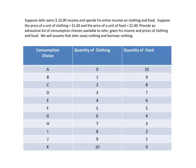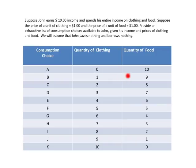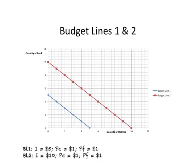For example, at consumption choice A, suppose John decides to buy no clothing. He has ten dollars to spend on food, and since the price of each unit of food is one dollar, the maximum amount of food he can buy is ten units. At point B, if John buys one unit of clothing, he spends one dollar and is left with nine dollars, so he can buy nine units of food. In this way we complete the full table of consumption choices.